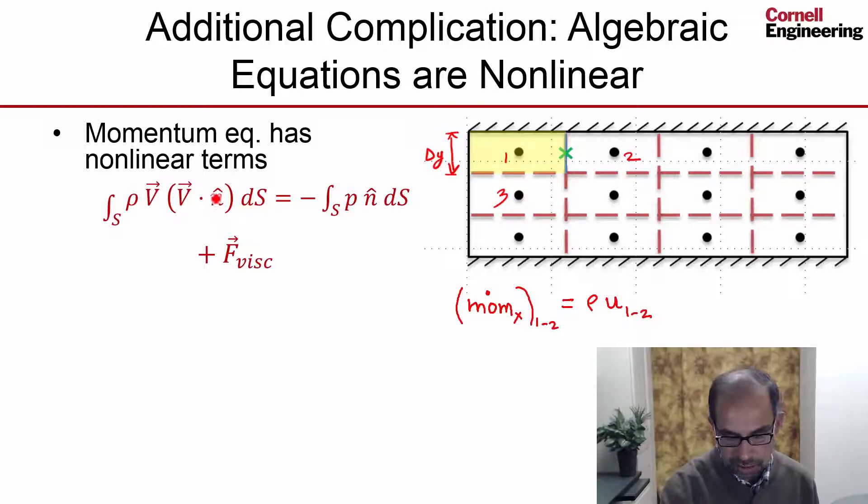V dot n—that's the normal component of velocity at that face. And again, the normal is in the x-direction, so that's just u. And again, we'll assume that that's constant over that surface. So we'll get another u12.